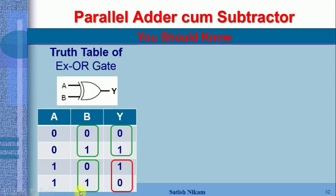So we can conclude: when one input of the XOR gate is zero, the output Y is the second input B. If one input is one, the second input gets complemented. This property is required in the designing of the parallel adder-subtractor circuit.